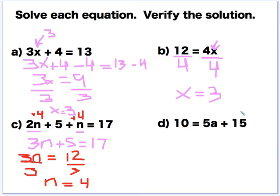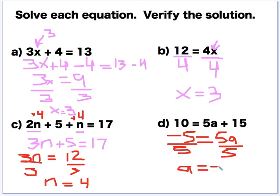And this one is just like the other ones. I'm going to be subtracting by 15. You're actually going to get negative 5 is equal to 5a. Divide by 5, divide by 5, and a is equal to negative 1. Plug it back in, and you should be done.